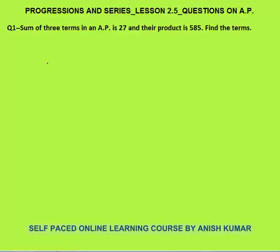Hello, this is Progressions and Series lesson 2.5. In this lesson I will discuss questions on AP. The first question: the sum of three terms in AP is 27, their product is 585 — find the terms.